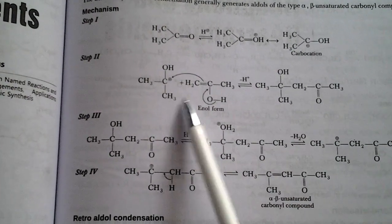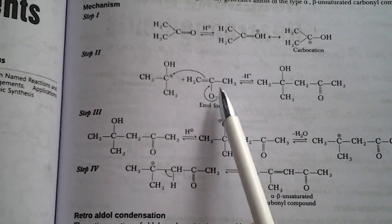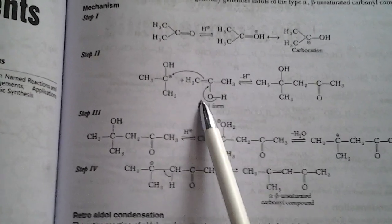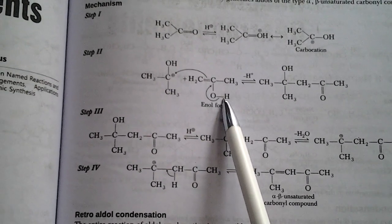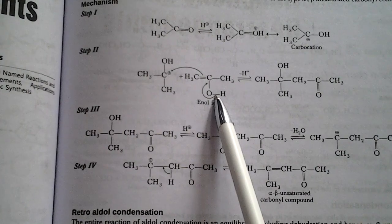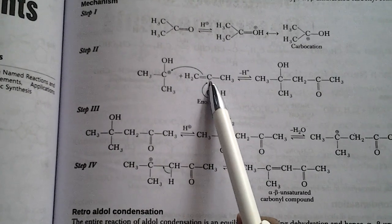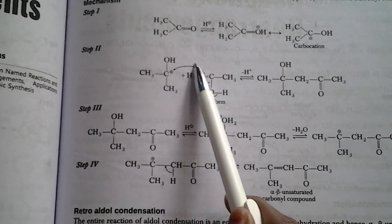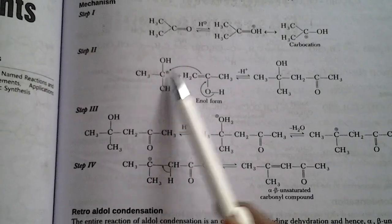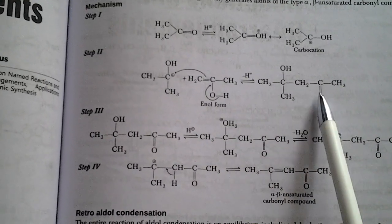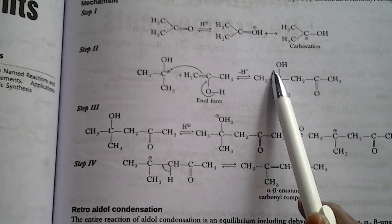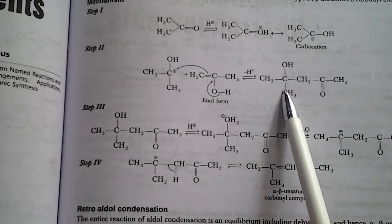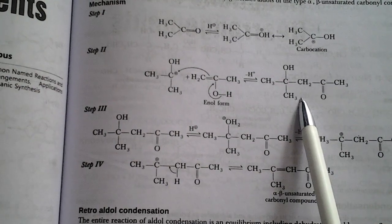second step. The carbocation will be added to an enolic form. In this, the H+ will be removed, and this bond will be taken by the carbon. This bond will be attached to carbocation, hence forms a keto form and a hydroxy group.